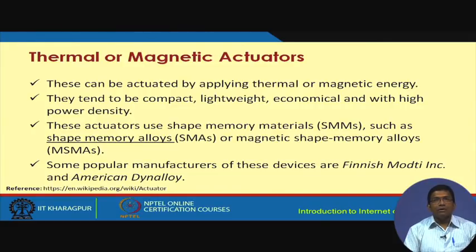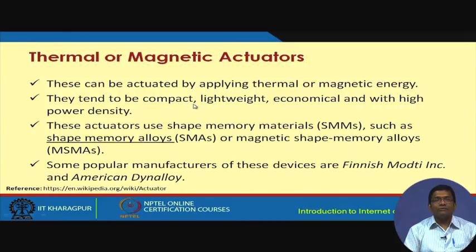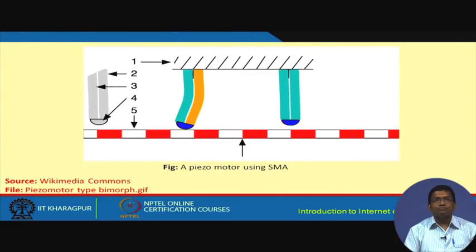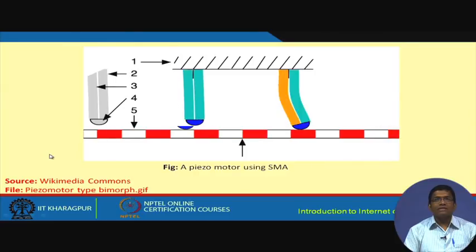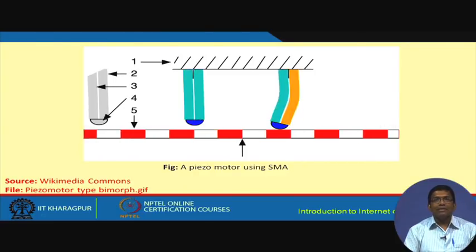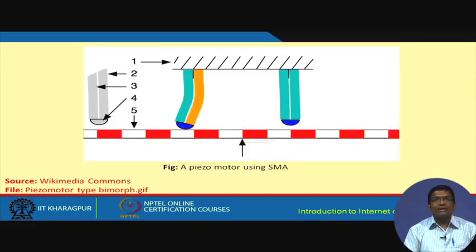Thermal or magnetic actuators are actuated by applying thermal or magnetic energy. They are popular because they are compact, lightweight, economical, and have high power density. These actuators use shape memory materials or shape memory alloys (SMAs), which are very popular at present. Here is an example of an SMA-based piezo motor.